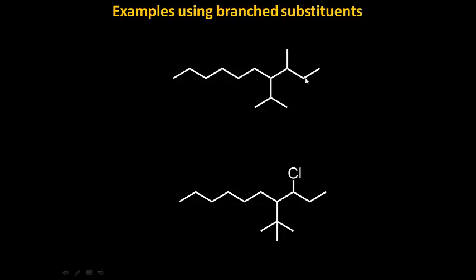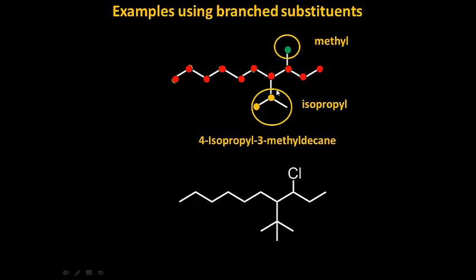Let's look at a couple of examples. In the top example, I find my longest chain first. Following the dots, the longest chain is the chain in red. FLC done. Now WOC - what's on the chain? I have a methyl here and an isopropyl here. The methyl is at carbon number 3. The isopropyl - 1, 2, 3, 4 - is at carbon number 4. So this becomes 4-isopropyl-3-methyldecane.